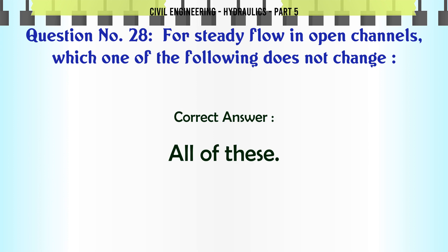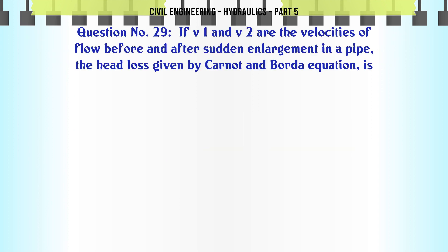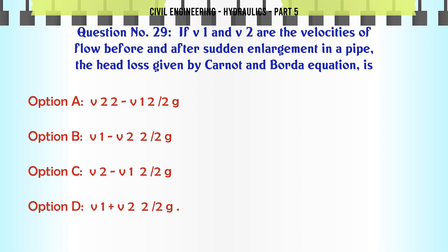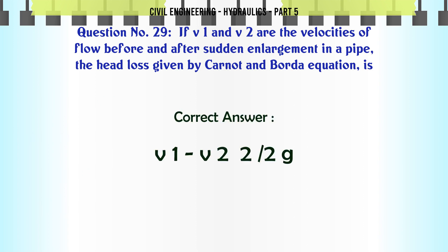If V1 and V2 are the velocities of flow before and after sudden enlargement in a pipe, the head loss given by Carnot and Borda equation is: A. (V2² - V1²)/2g, B. (V1 - V2)²/2g, C. (V2 - V1)²/2g, D. (V1 + V2)²/2g. The correct answer is (V1 - V2)²/2g.